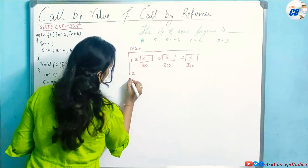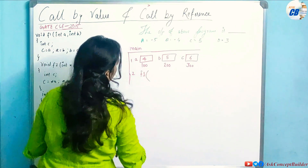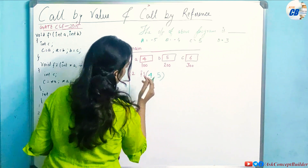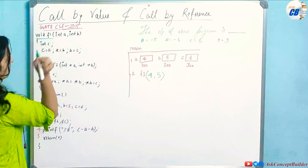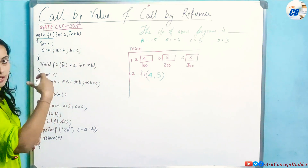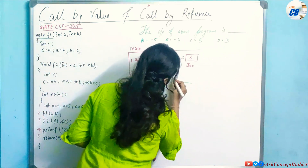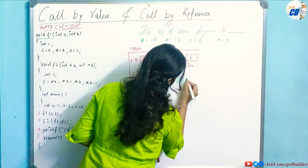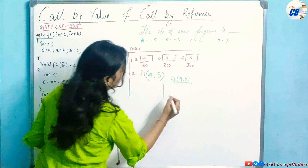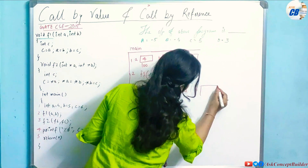In the second step, we call f1(a, b) — passing the values of a and b, which are 4 and 5. The f1 function receives these: the value 4 is received by variable a and 5 is received by variable b inside f1. The receiving parameters are integer variables since values are being passed.